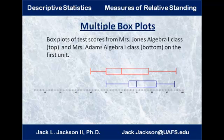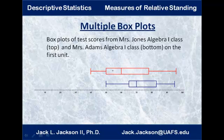We can compare two box plots. Looking at test scores from Mrs. Jones' Algebra 1 class on top in red and Mrs. Adams' Algebra 1 class on the bottom in blue for the first unit: Mrs. Jones had the highest score but also the lowest, and her data is more widespread — both the overall range and the middle box are wider. Mrs. Adams has a quarter of her values in a very small spot. The median and minimum are much higher for Mrs. Adams. In general, Mrs. Adams' class did a little better and was more consistent on this exam.